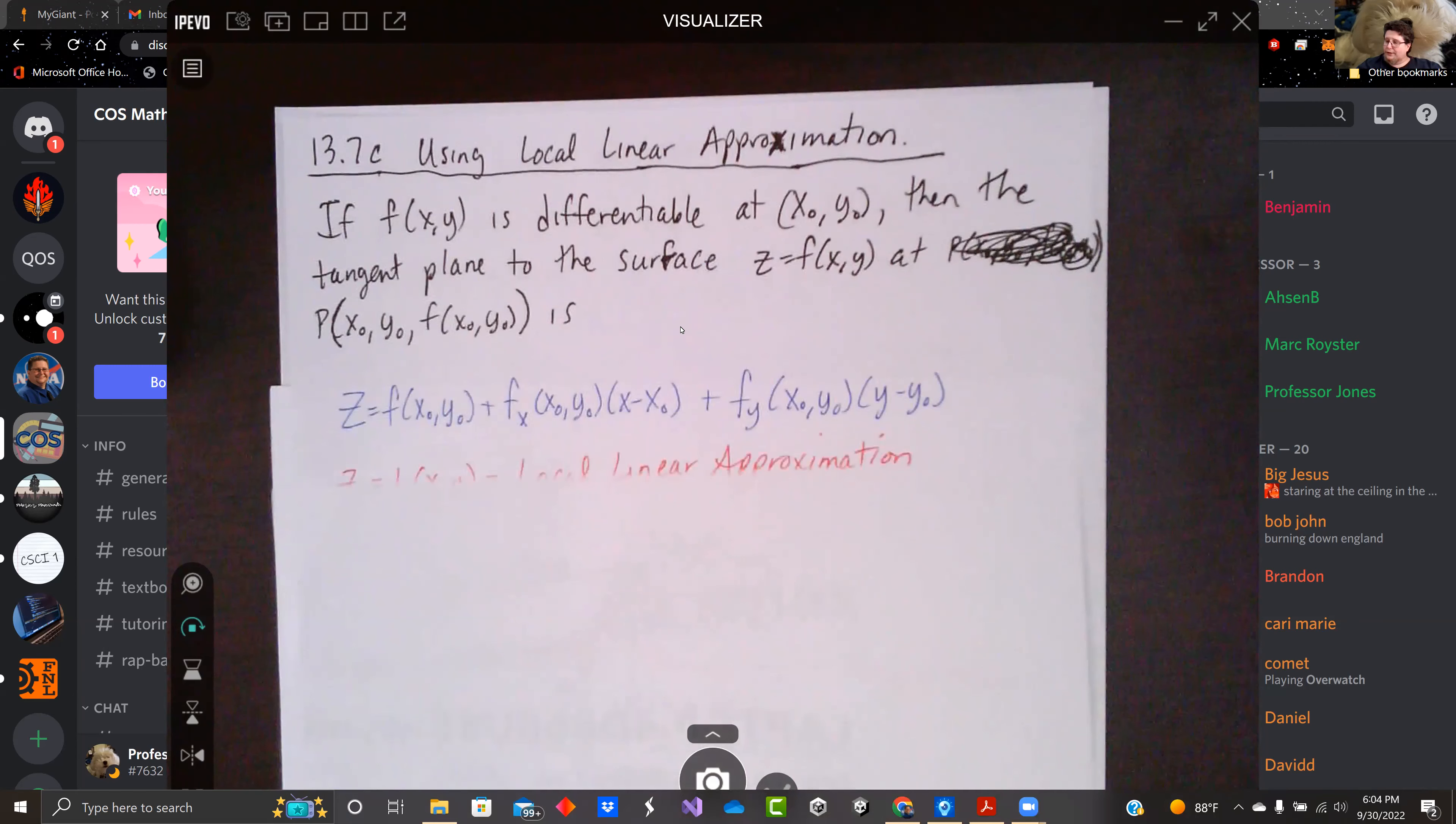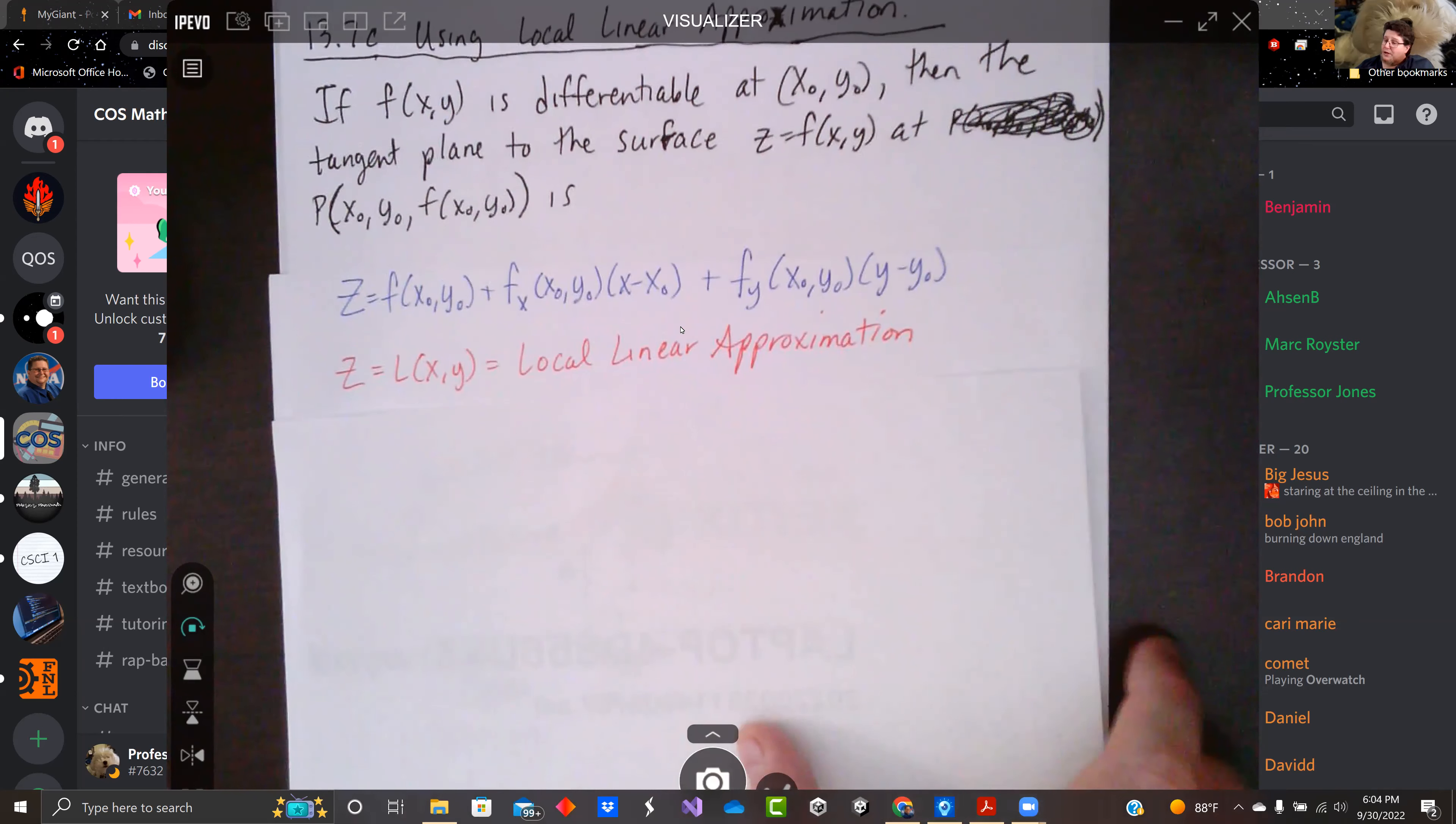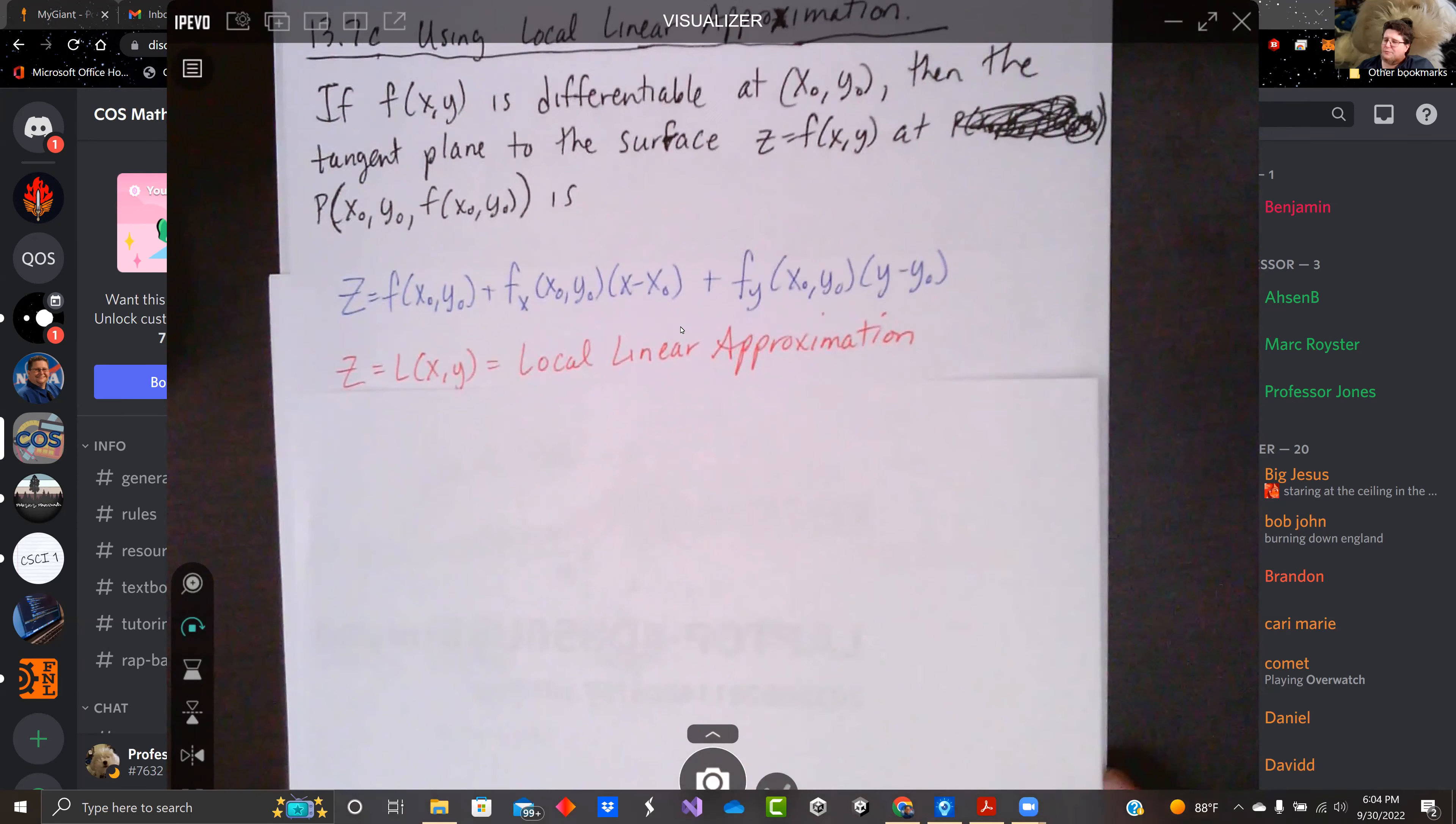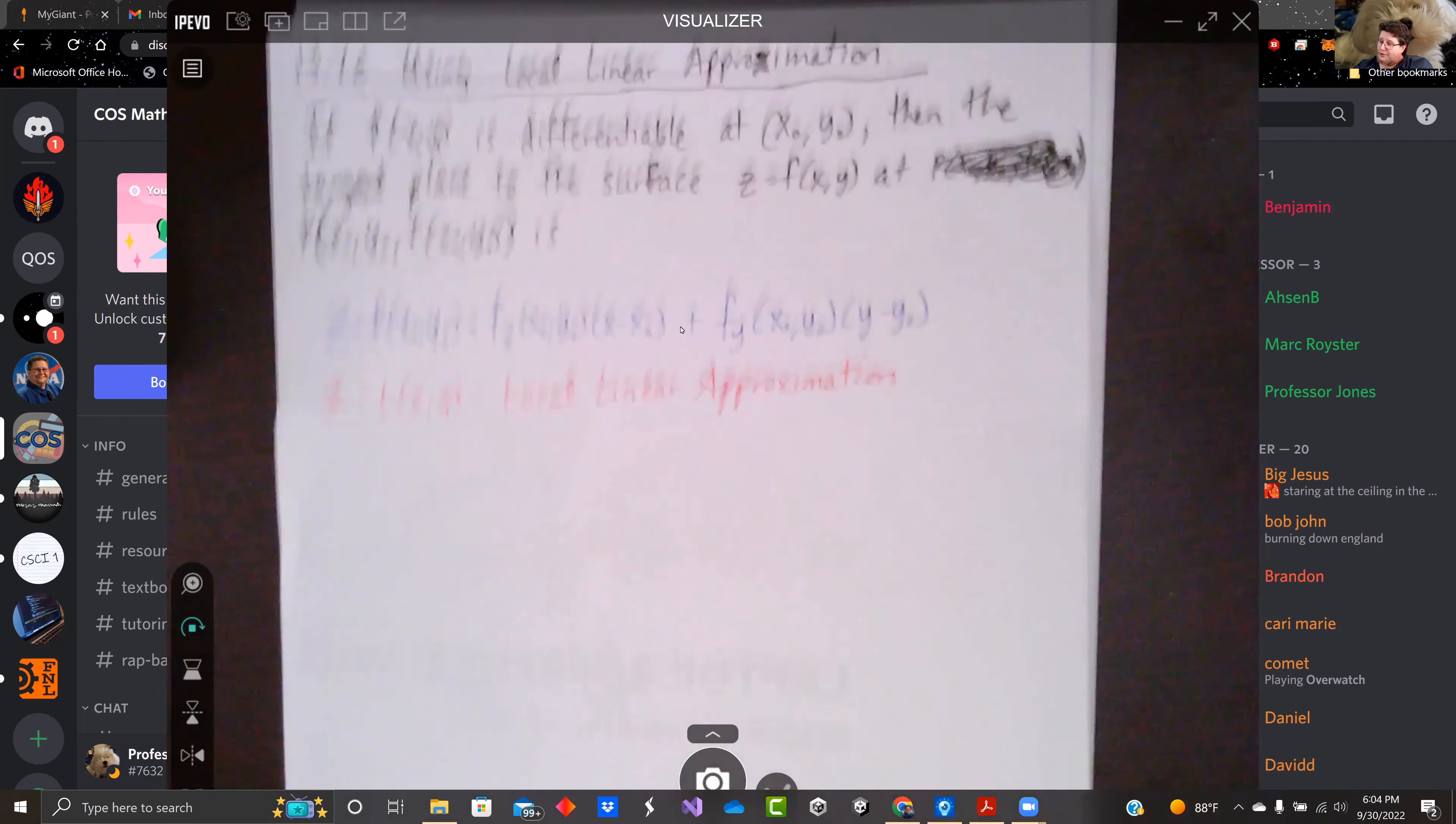This was local linear approximation previously. We saw this before. I think it was 13, because it was multivariable functions. So how can we use this here?